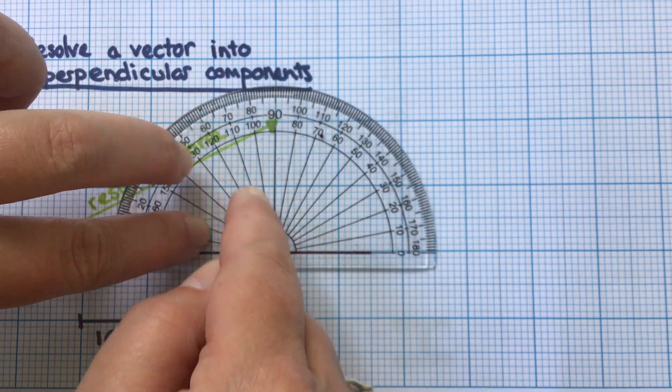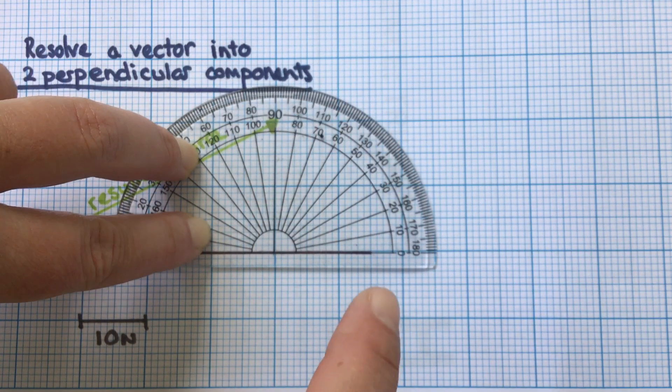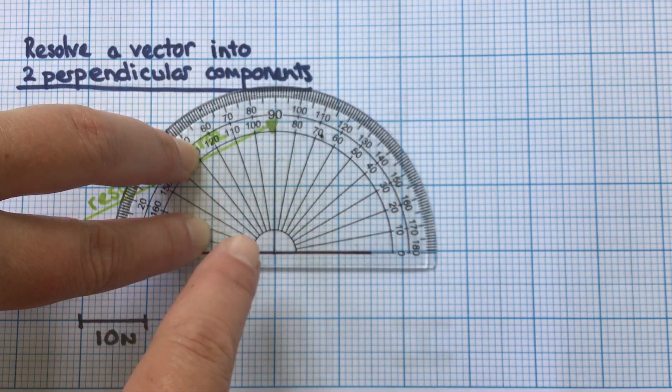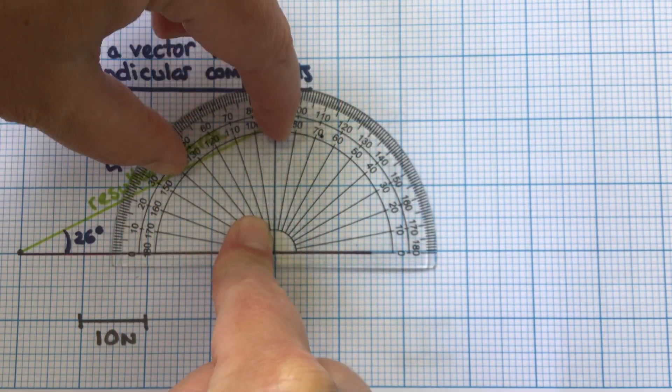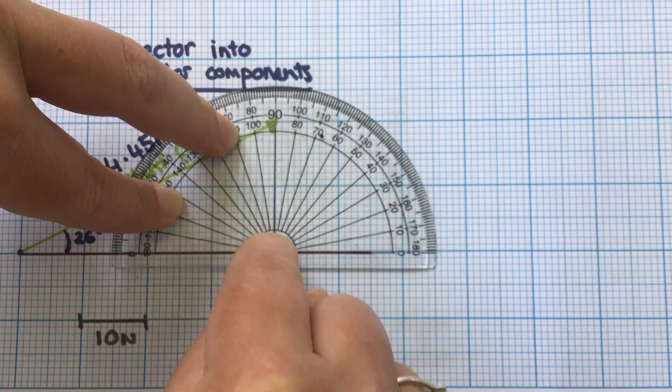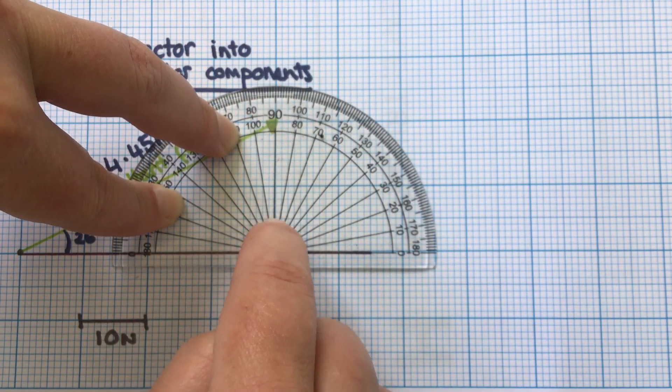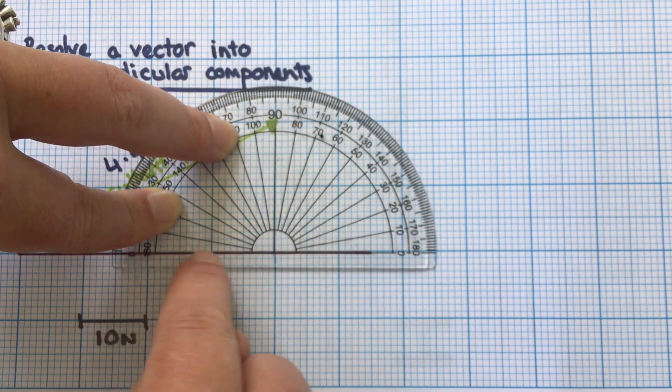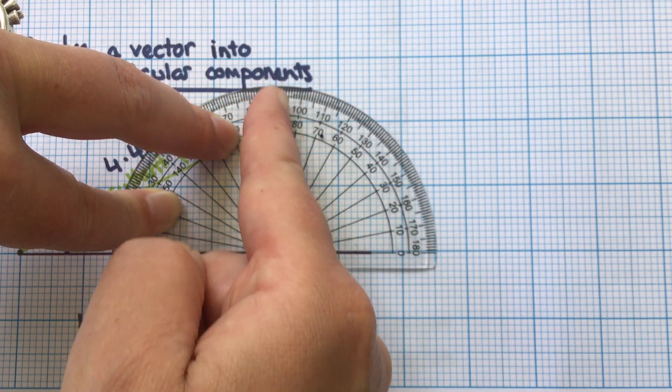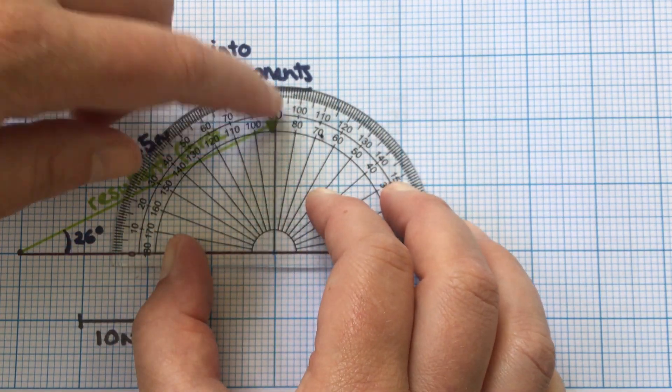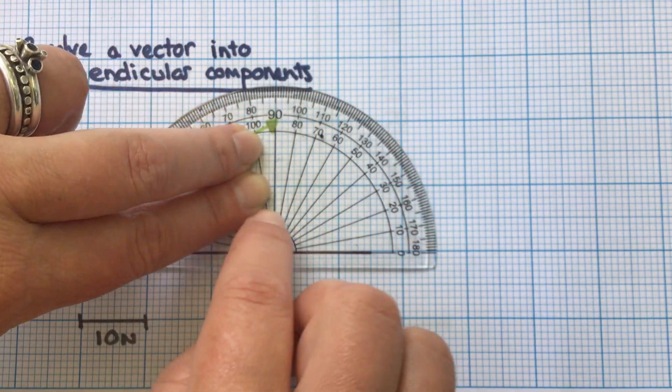I'm going to look where the tip of this resultant vector meets 90 degrees. Because we're doing this on graph paper it's easier to see, but you can do this without graph paper—you just need to check the angle. I need to make sure this angle is 90 degrees because my two components need to be perpendicular to each other. I've lined this up and the 90-degree line reaches the tip, so I'm happy with that.